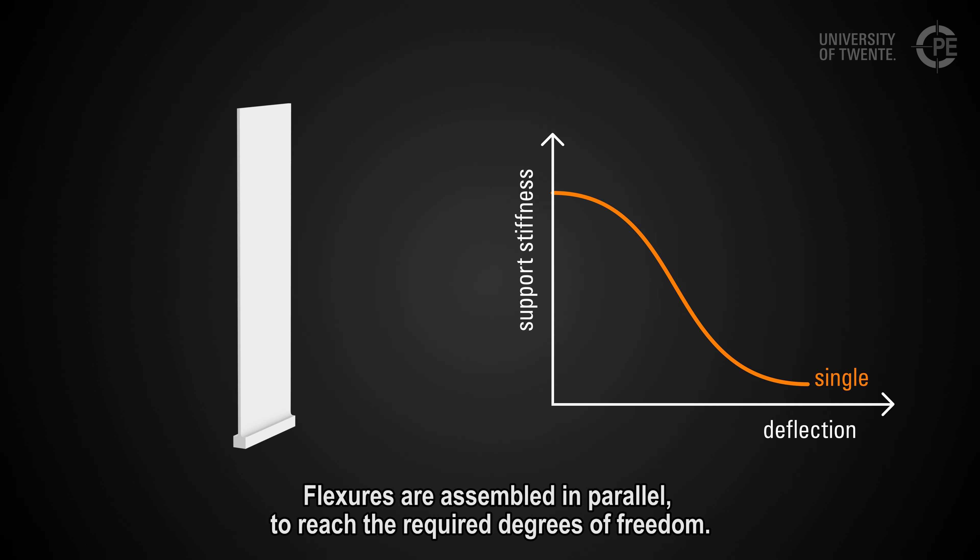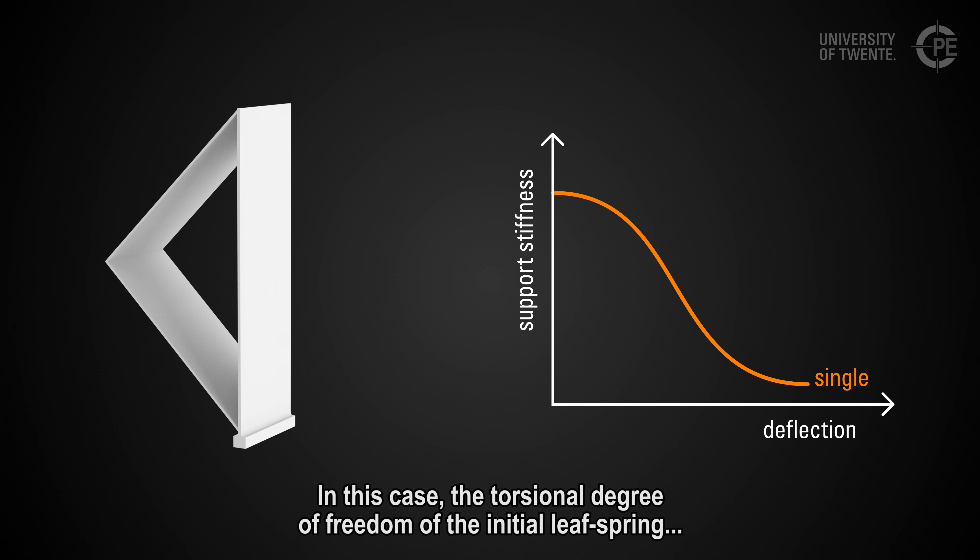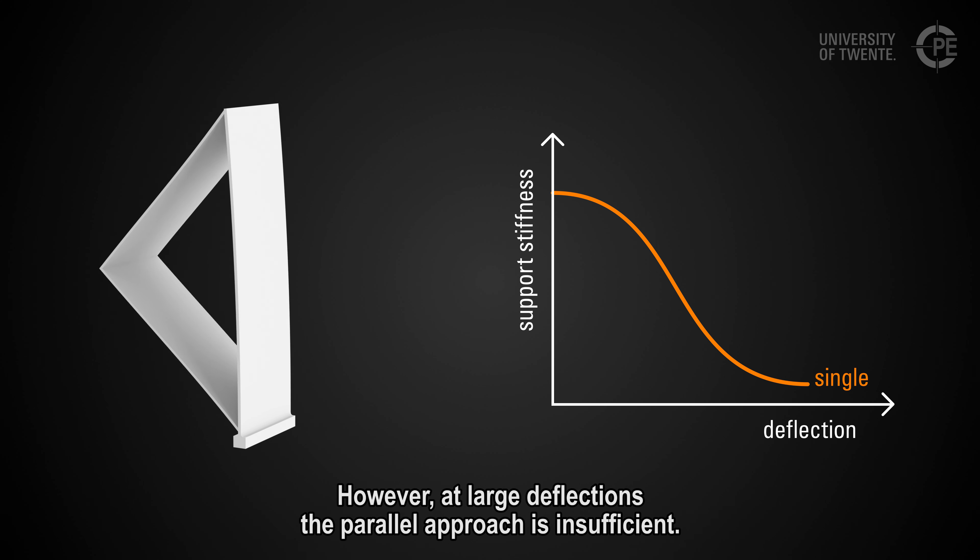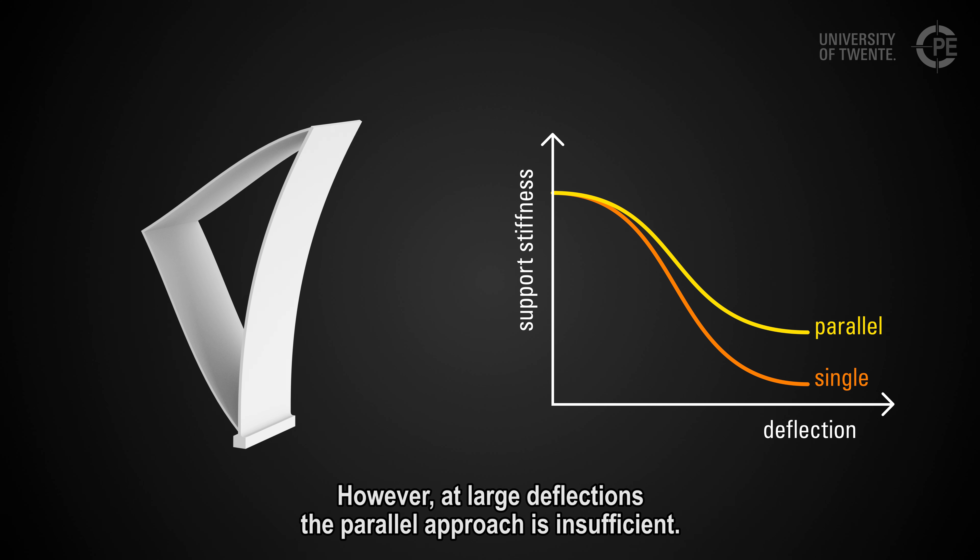Flexures are assembled in parallel to reach the required degrees of freedom. In this case, the torsional degree of freedom of the initial leaf spring is constrained by a folded leaf spring in parallel. However, at large deflections, the parallel approach is insufficient. An external force then still leads to a large unwanted torsion component in the leaf spring.